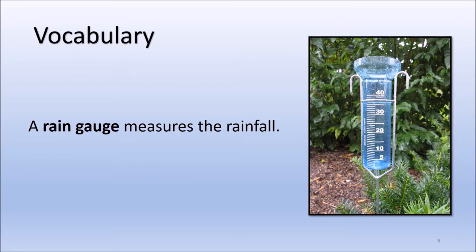Meteorologists also measure how much rain an area has received. A rain gauge measures the rainfall. A rain gauge is a clear tube that has marks on it for inches or centimeters. As the rain falls, it fills the tube. Once the rain has stopped, meteorologists can read the scale to see how much rain fell.